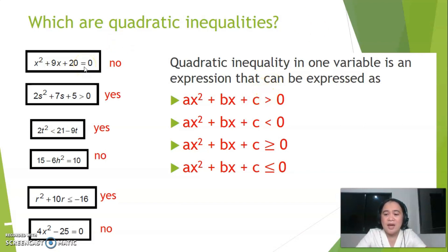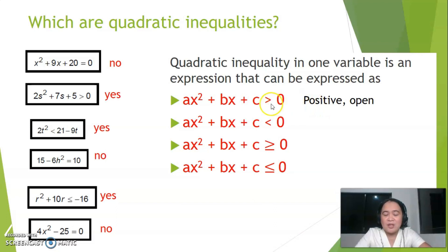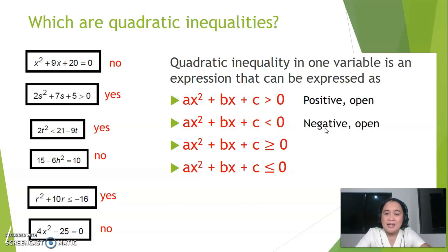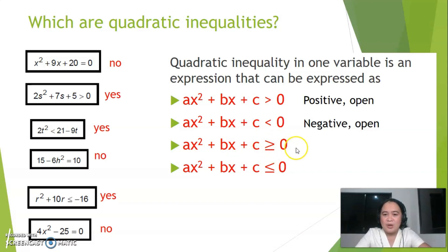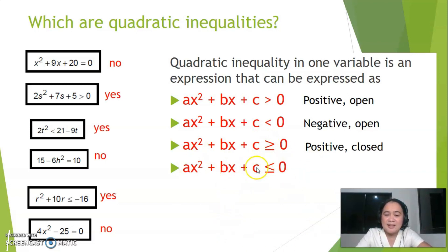If it uses an equal sign, it is a quadratic equation. Comparing the forms: greater than zero means positive numbers — no equality, so it is open. Lesser than zero means negative — no equality, so still open. Greater than or equal to zero is positive and closed, because an equality symbol is attached. Lesser than or equal to zero is negative and closed. Take note of these distinctions.